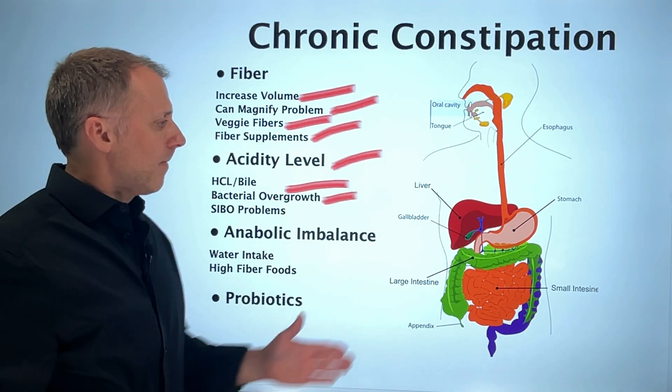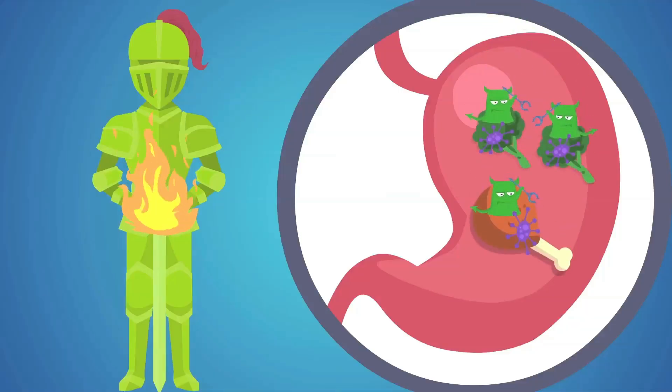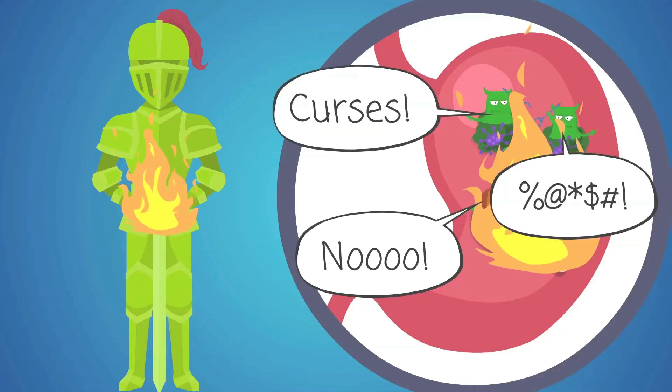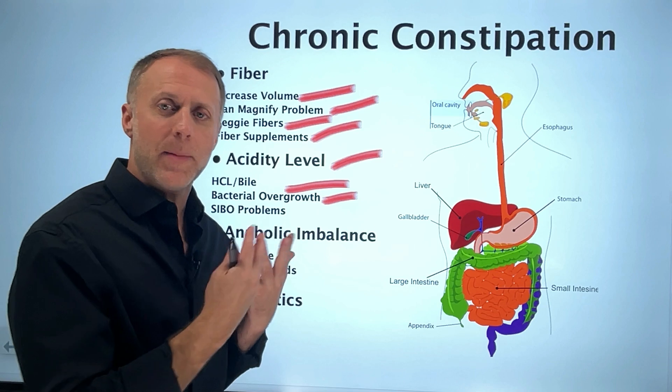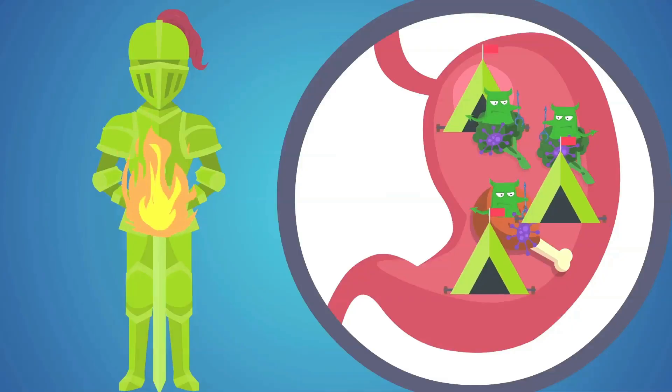Now when we take this a step further, we need to understand that this stomach acid not only helps us digest our food, it's also the barrier that kills all the bad guys when it comes in on the food we're eating. So when these varmints come in, they die in an acid bath when the stomach is making enough hydrochloric acid. So if they don't die, then they come on in there and they set up camp and they raise their kids and have a cake party.